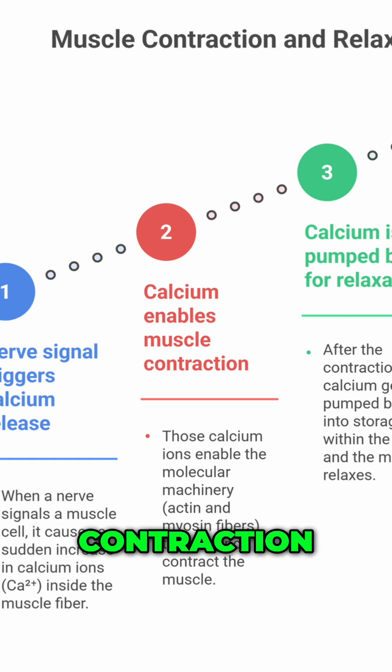After the contraction, calcium gets pumped back into storage within the cell and the muscle relaxes. If there is no calcium, your muscles can't contract properly.